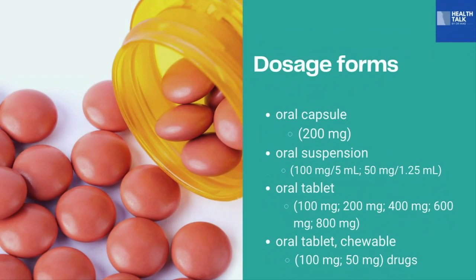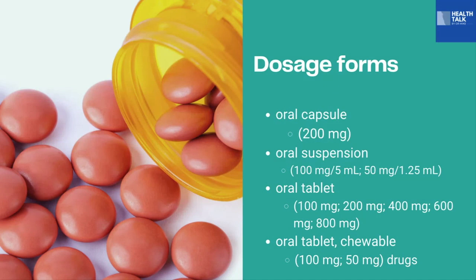This medication exists in the following dosage forms. You may take it as an oral capsule at 200 mg. It is also formulated as an oral suspension for children, usually 100 mg per 5 ml or 50 mg per 1.25 ml. Some doctors advise oral tablets formulated at 100 mg, 200 mg, 400 mg, 600 mg, and 800 mg. Other doctors may prescribe chewable oral tablets at 100 mg or 50 mg. Sometimes this medication can be bought over the counter, meaning without any prescription.